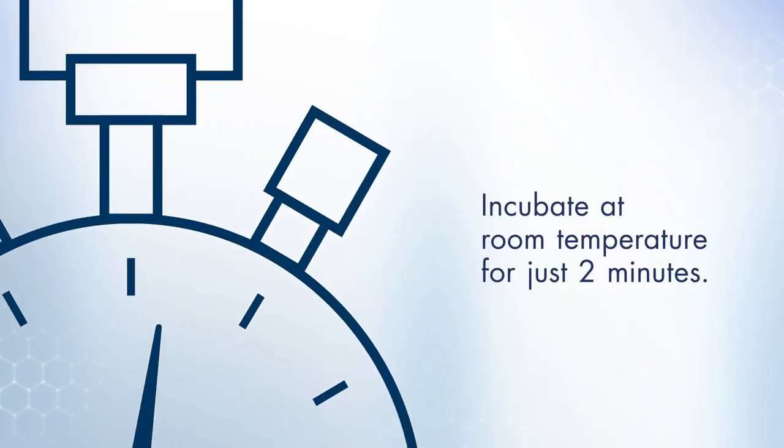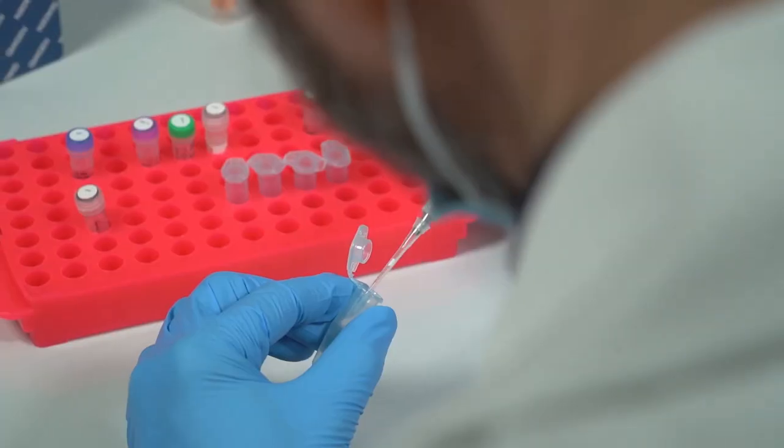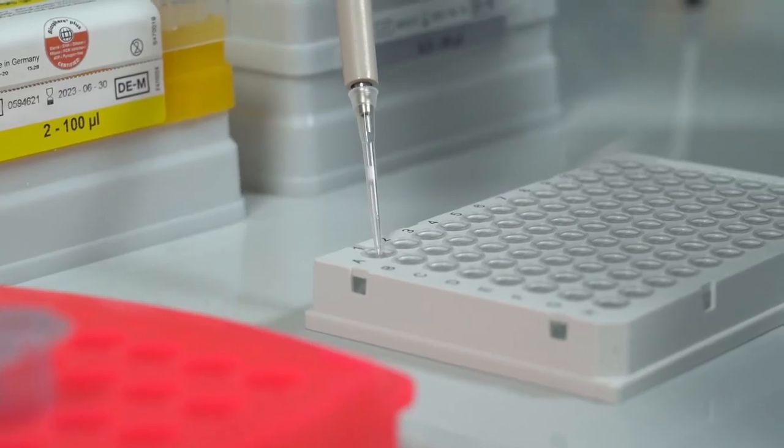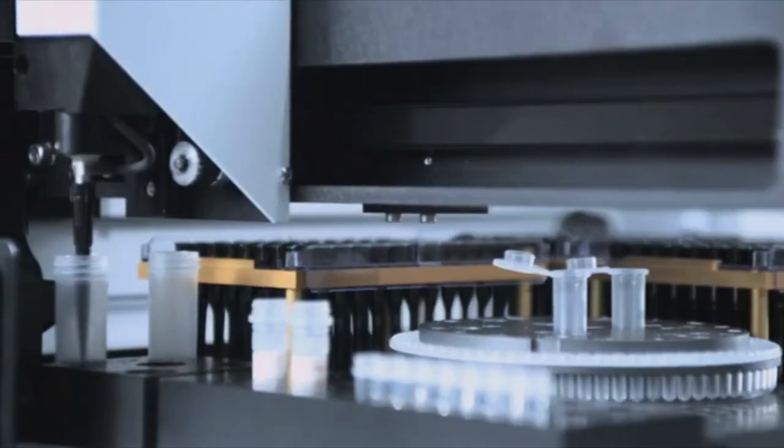Incubate at room temperature for two minutes. Add 10 microliters of the prepared reaction mix to the PCR tube or well. You can automate the reaction setup using your liquid handler, eliminating manual pipetting.